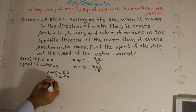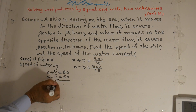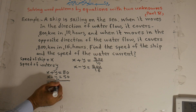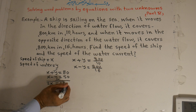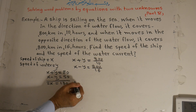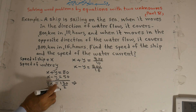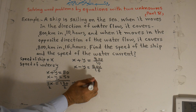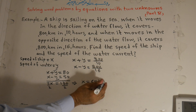Now we add both equations algebraically. The positive y cancels with the negative y, leaving 2x. So 2x is equal to 80 plus 50, which is 130. We divide both sides by 2, so x is equal to 130 divided by 2, which is equal to 65 kilometers per hour.